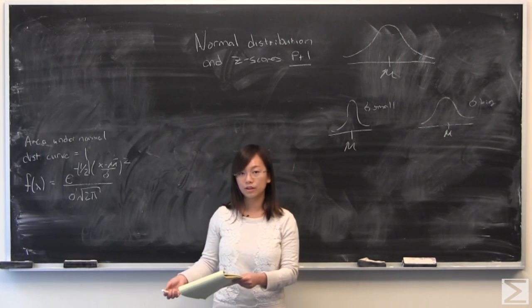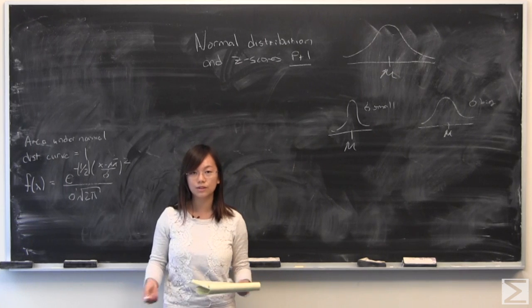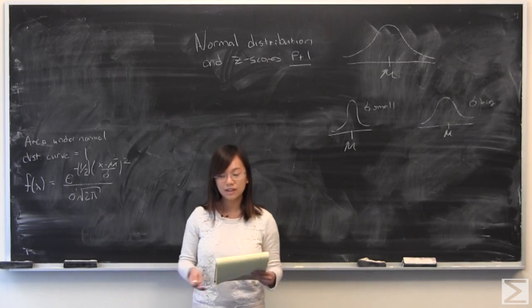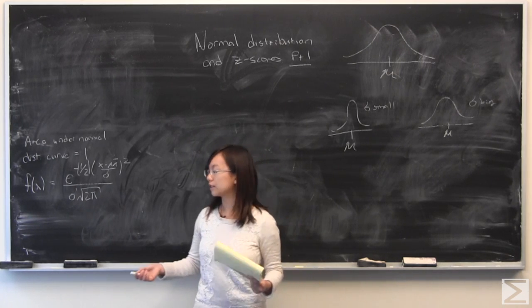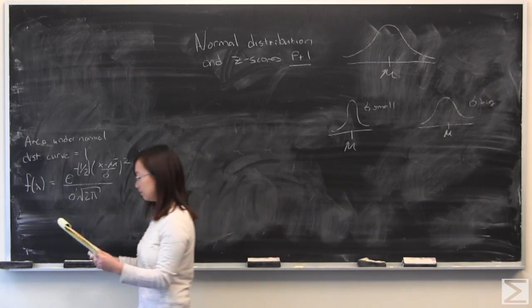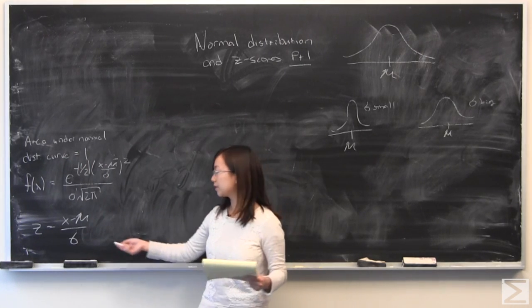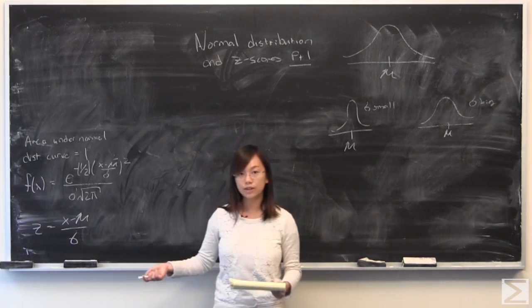In the next video, I'll be going over examples of how to use z-scores in order to apply it to the real world. It's very helpful. But for now, I'll just be going over what things are. So, z-score is a measure of the number of standard deviations a value x strays from the mean mu.